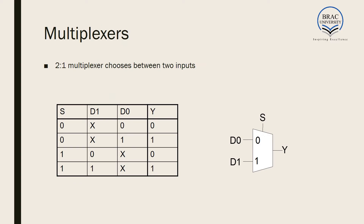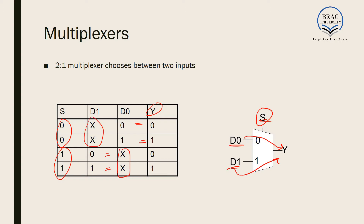Now let us look at multiplexers. We have learned about multiplexers in digital electronics. A multiplexer contains a select input: if the select input is 0, it transmits whatever is in D0 to the output; if the select input is 1, it maps D1 to the output. If select is 0, D1 does not matter; if select is 1, D0 does not matter. This is the basic multiplexer from digital electronics. The equation of the multiplexer is Y equals S·D1 plus S-bar·D0. If S is 0, S-bar turns to 1, giving Y equal to D0. If S is 1, S-bar turns to 0, giving Y equal to D1.